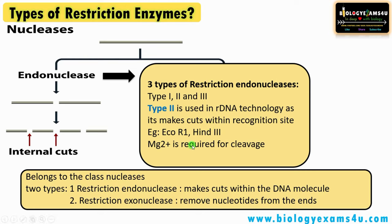Type II is widely used in recombinant DNA technology as it makes specific cuts within the DNA molecule at recognition sites or restriction sites. Examples include EcoRI and HindIII. Magnesium ions are required for cleavage. Type I and Type III make random cuts, so they are rarely used in recombinant DNA technology.